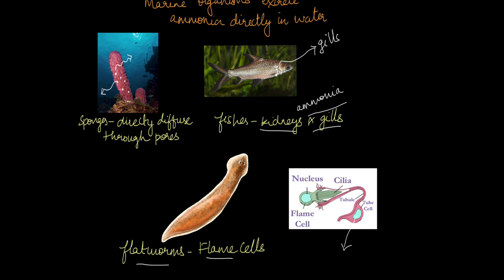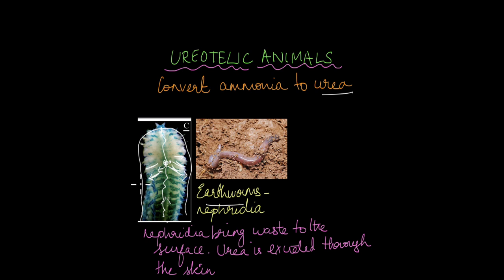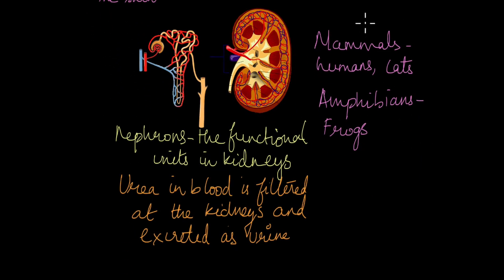What about ureotelic organisms? Ureotelic organisms convert ammonia to urea, which is less water-soluble than ammonia. Earthworms are ureotelic. They breathe through their skin, and similarly excrete waste through their skin. Inside their body they have tiny tubes known as nephridia, which bring urea from the circulation to the surface of the earthworm, from where it is excreted into the environment.